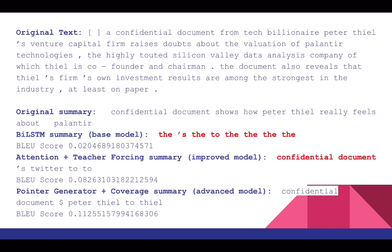The improved model with attention mechanism and teacher forcing managed to capture the information of 'confidential document.' This validates that the attention mechanism improved the model performance by better locating where to look at in the original news when generating the summarization. The advanced model with pointer generator and coverage, implemented on the basis of the improved model, does an even better job by successfully capturing another important piece of information: Peter Thiel. Words like 'Peter Thiel' could be very hard to capture by the previous two models, which try to generate similar words based on probability distributions over the vocabulary in the entire dataset. The capture of 'Peter Thiel' shows how the pointer generator network takes the benefit of including the probability of outputting words directly from the original news. We can also see that our improved model and the advanced model achieve higher BLEU scores in this sample.